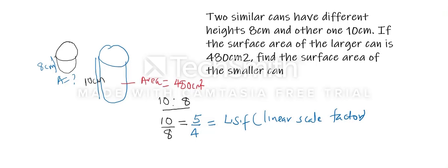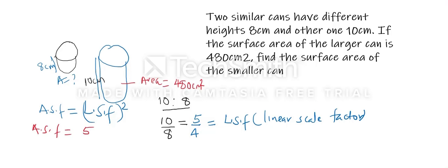To get the missing area, we have to find the area scale factor. The area scale factor is equal to the linear scale factor squared. Therefore, the area scale factor is equal to 5 divided by 4, squared, which is equivalent to 25 over 16.